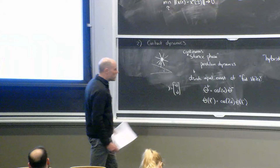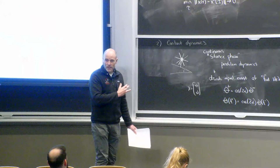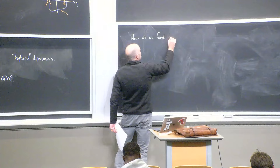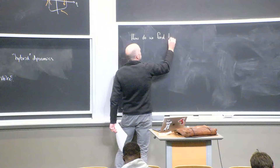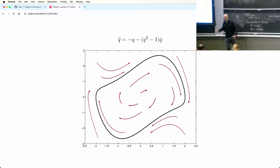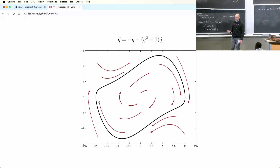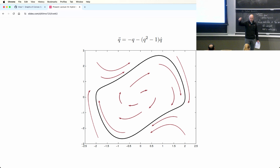Now let's think about how we do computation with these hybrid models. First, how do we find limit cycles? For the van der Pol oscillator, which is almost globally stable, you could just simulate forward until you find something periodic. But that's inefficient and doesn't work for systems like the kneed compass gait, which has an extremely small basin of attraction. You'd have to get the initial conditions exactly right — like finding a needle in a haystack. We need something stronger.